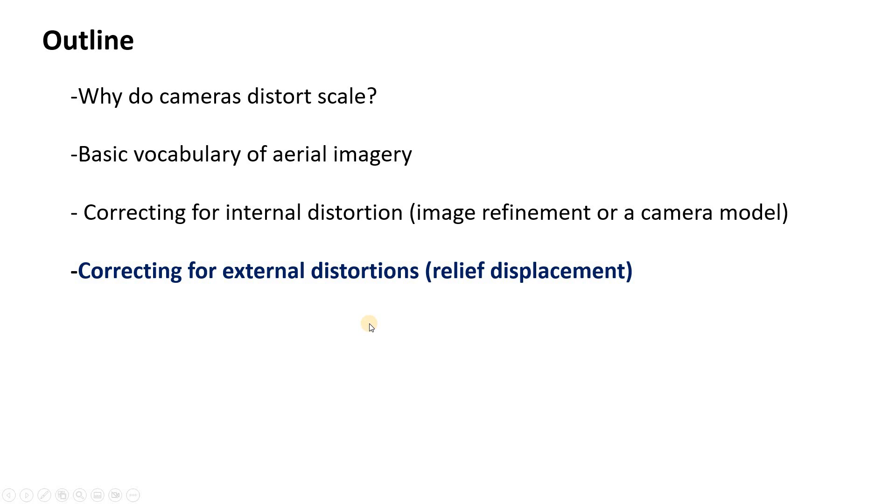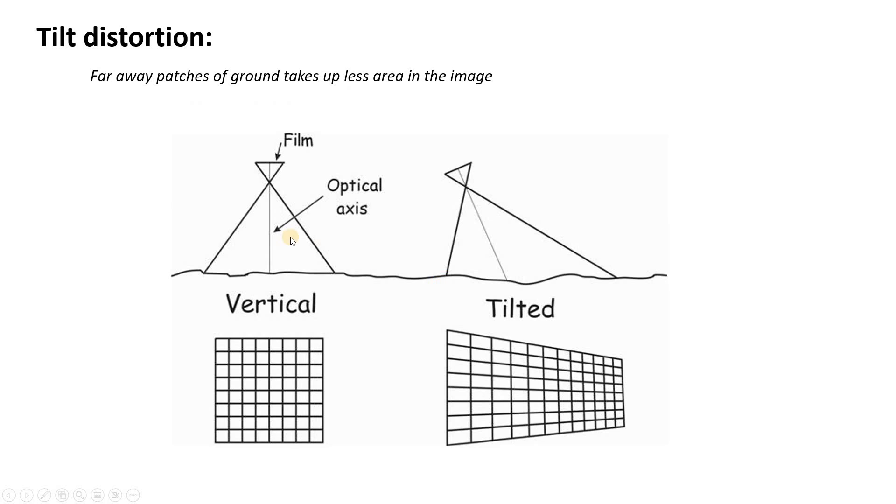So let's close out this video talking a little bit about external distortions, relief displacement and tilt. So we said in this video we're always going to assume a vertical optical axis, but in practice many satellite images can be tilted. And essentially that has the effect that far away patches of ground take up a little bit less space in the image than they should. So correcting for this requires knowing the tilt, knowing the geometric specs of your camera, and restoring or enlarging some of these areas to more accurately represent their true area.